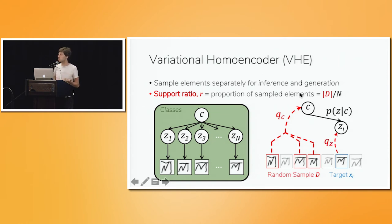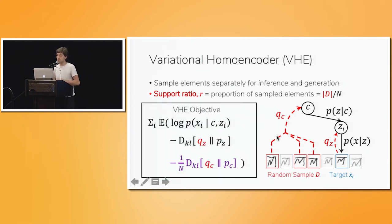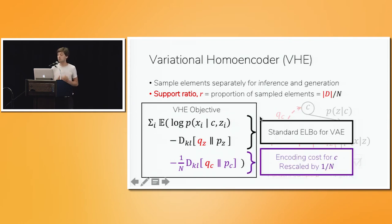So once we've inferred c, we can just do the usual variational autoencoder thing. We use a second encoder network on the target image to infer z, and then we use that to decode the target image itself. So we started with a random sample of images, and then we decoded a new image from the same set, and that's why we call it a variational homoencoder. And putting those pieces together, that gives us the variational homoencoder objective. It's a sum over all of the examples in the dataset. And for each element, we have an expectation taken over this sampling procedure, where the first two terms in this expectation are just the standard ELBO you'd use for a VAE.